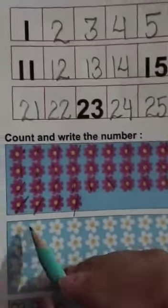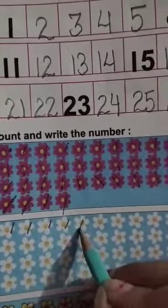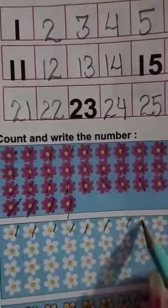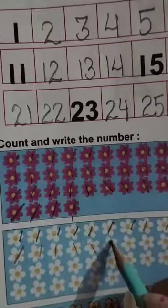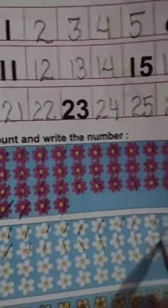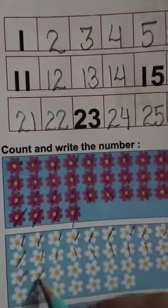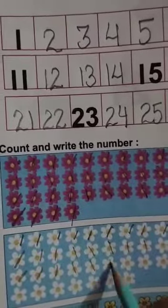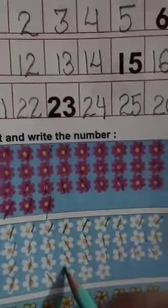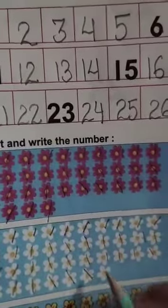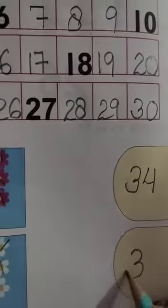After that we will count white flowers. 1, 2, 3, 4, 5, 6, 7, 8, 9, 10, 11, 12, 13, 14, 15, 16, 17, 18, 19, 20, 21, 22, 23, 24, 25, 26, 27, 28, 29, 30, 31, 32, 33, 34, 35, 36, 37. So here we will write 37.